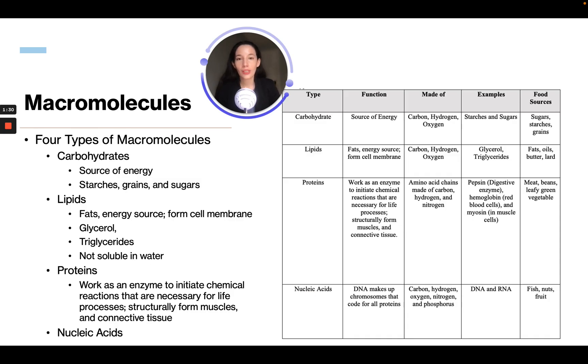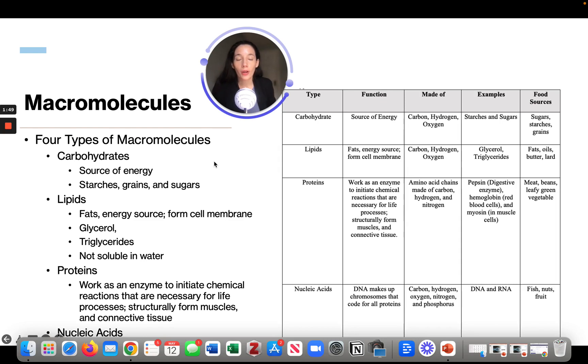There are four types of macromolecules. You're going to have your carbohydrates, which are a source of energy. Food sources can include sugars, starches, and grains. They are made from carbon, hydrogen, and oxygen.